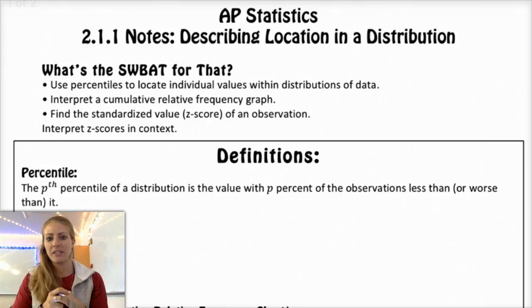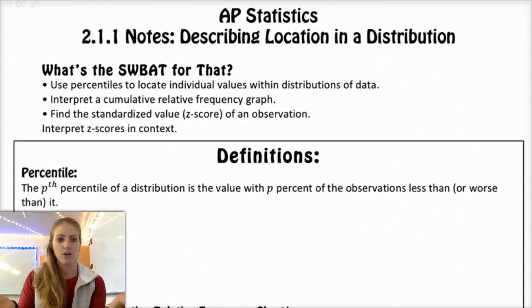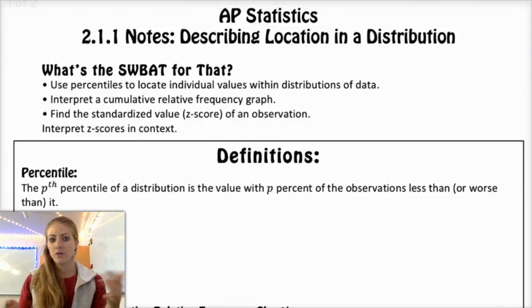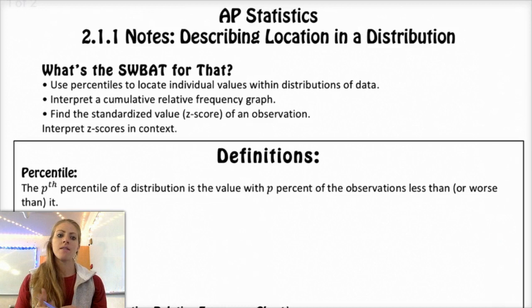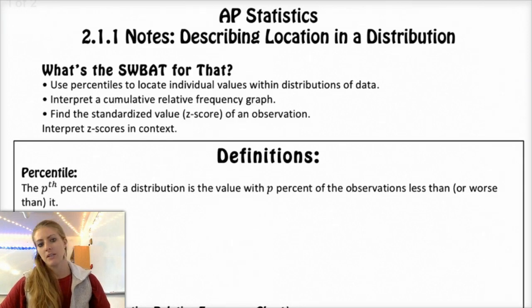Basically today what we're going to do is look at how do you figure out where an individual value falls within a distribution. We're going to use percentiles to locate an individual value, go over what a cumulative relative frequency graph is, and then talk about the standardized value of an observation, which in stats is known as the Z-score, and interpret Z-scores in context.